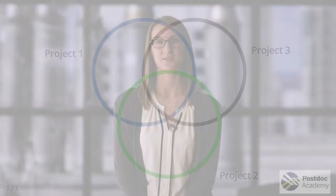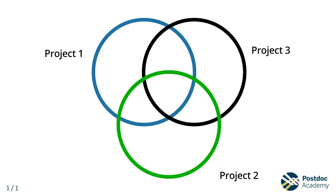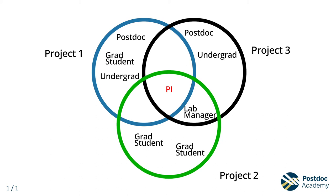Next, capture the working relationships that exist across your group by identifying who is involved with each project. List their role within the mini-network. Some people might be involved with just one project, while others work with multiple sub-teams across the group. In this example, the lab manager works on two of the major projects, and the PI oversees all three projects. If your community of practice is small, you may instead draw lines to connect people that collaborate across a single work stream.